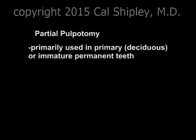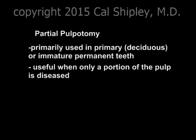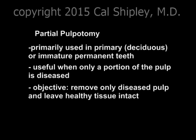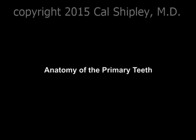Partial pulpotomy is a technique which is used primarily in primary, also known as deciduous teeth, or in immature permanent teeth in children, in situations where only a portion of the dental pulp has become diseased. The objective of partial pulpotomy is to remove only the diseased portion of the pulp, leaving the healthy tissue intact. I'll be discussing the advantages of leaving the healthy pulp tissue intact in a moment, but first let's take a look at some basic dental anatomy.